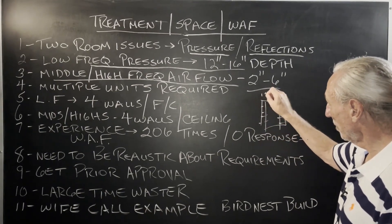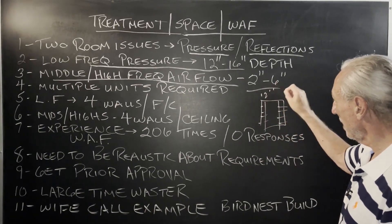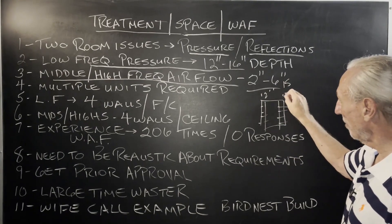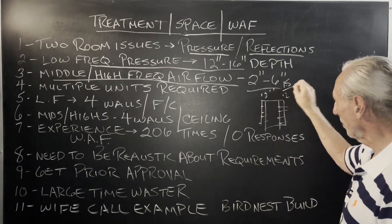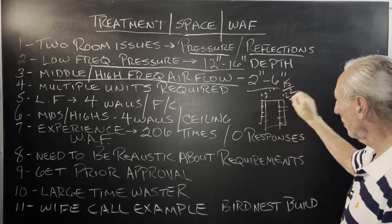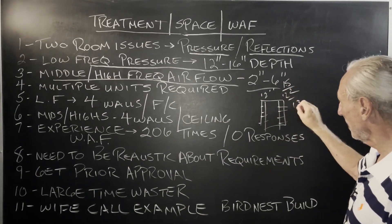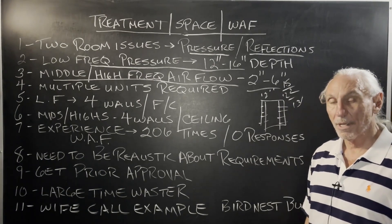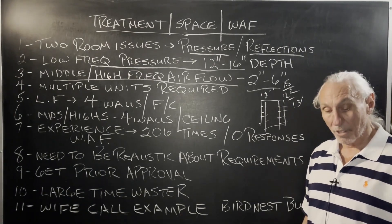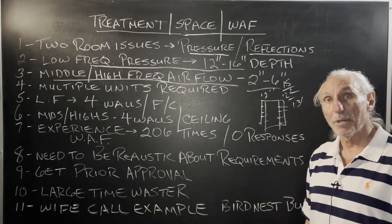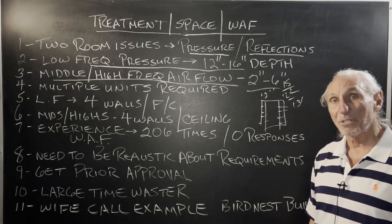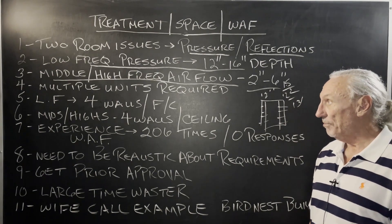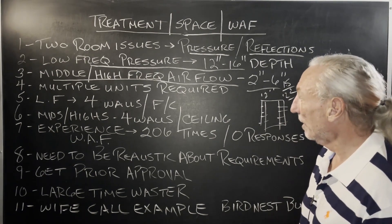Units are 12 inches deep. If your overall dimension is 15, you subtract two, so you're at 13 foot net. That's how it works. Unfortunately, to treat a room, you have to make it smaller. Doesn't sound right, but that's how it is.